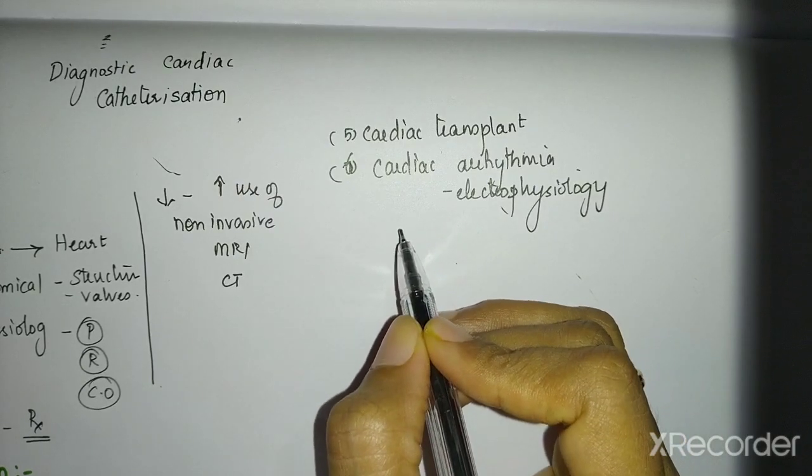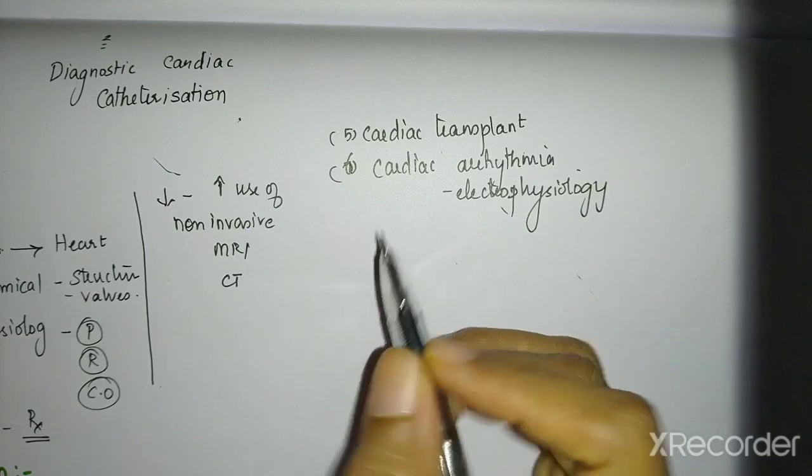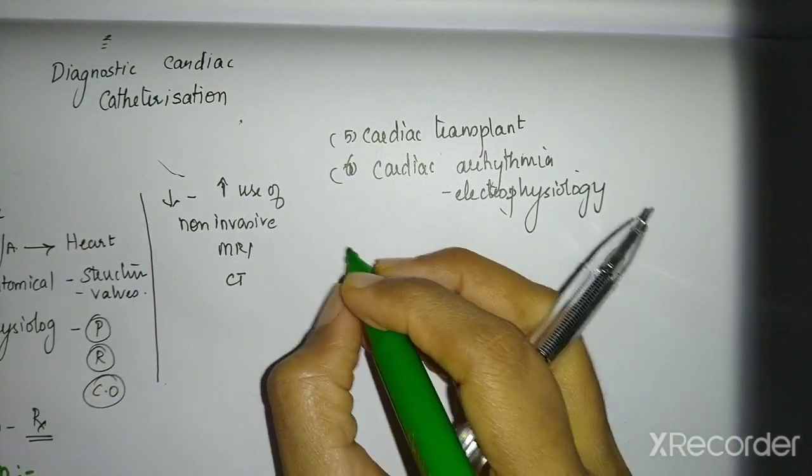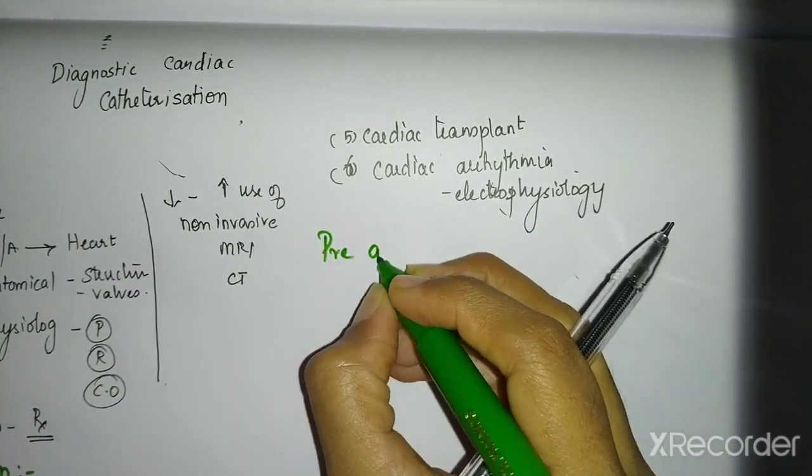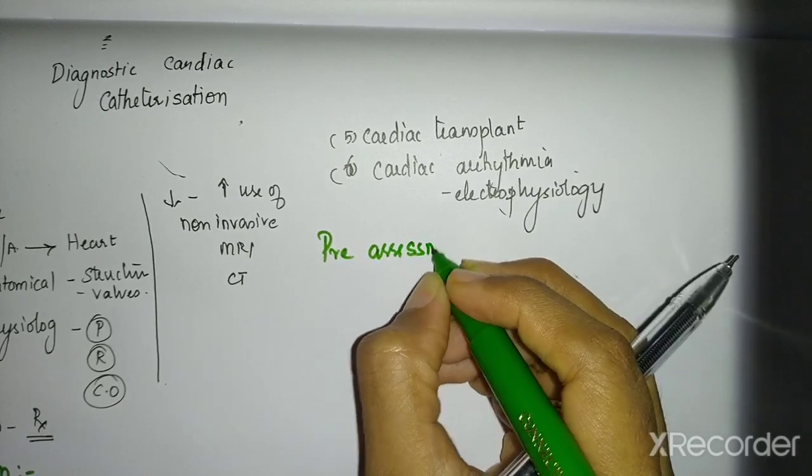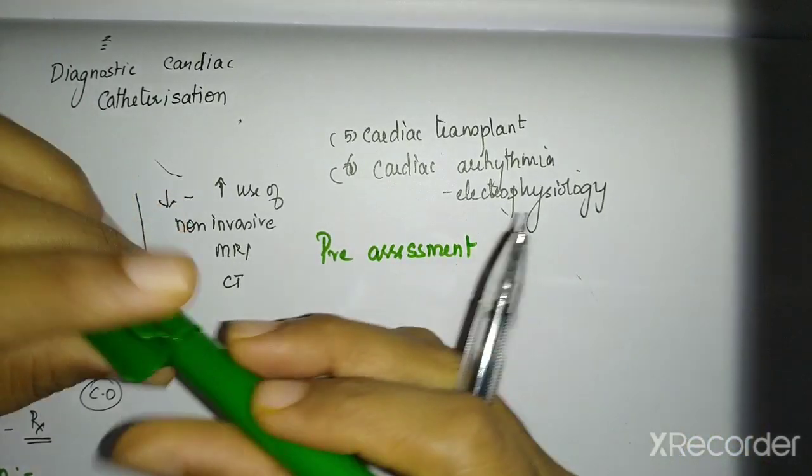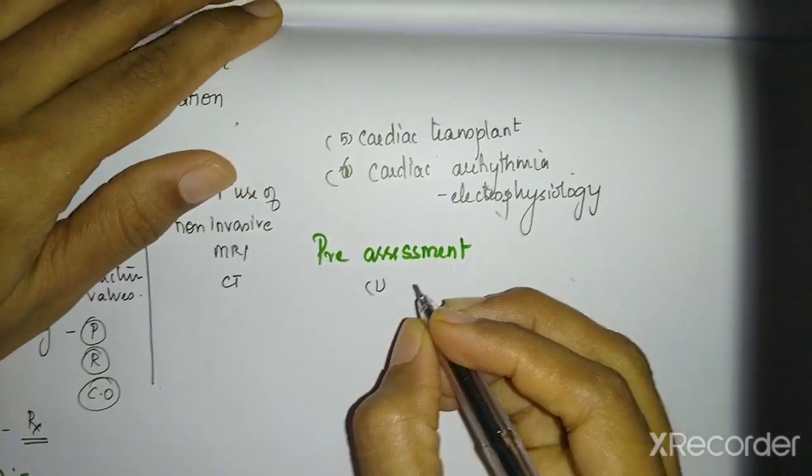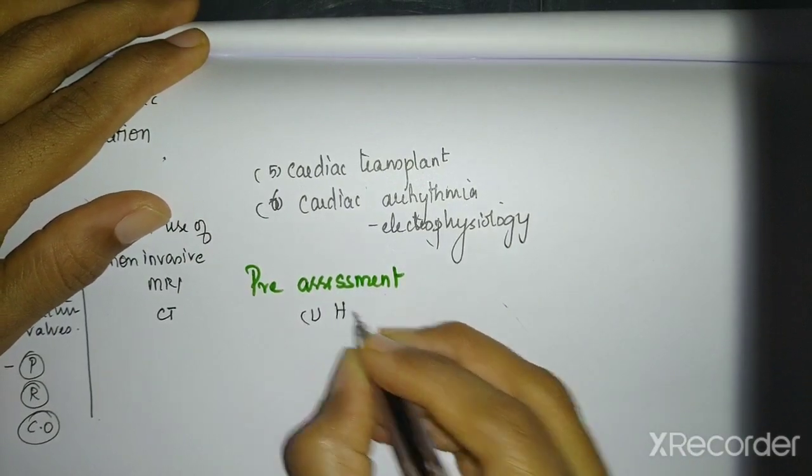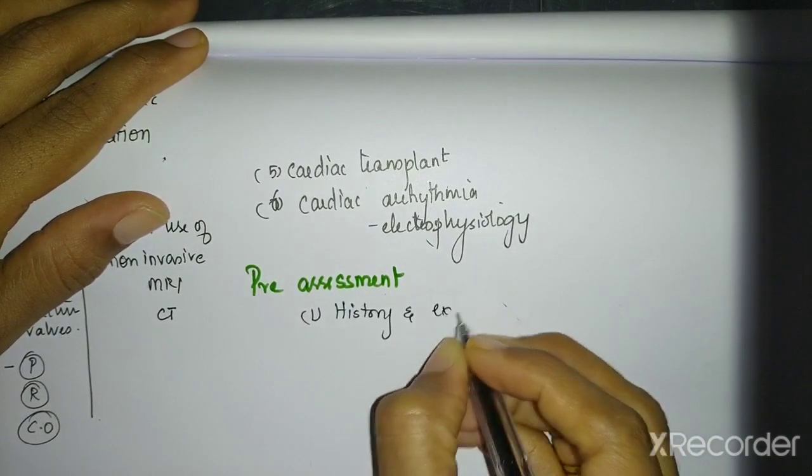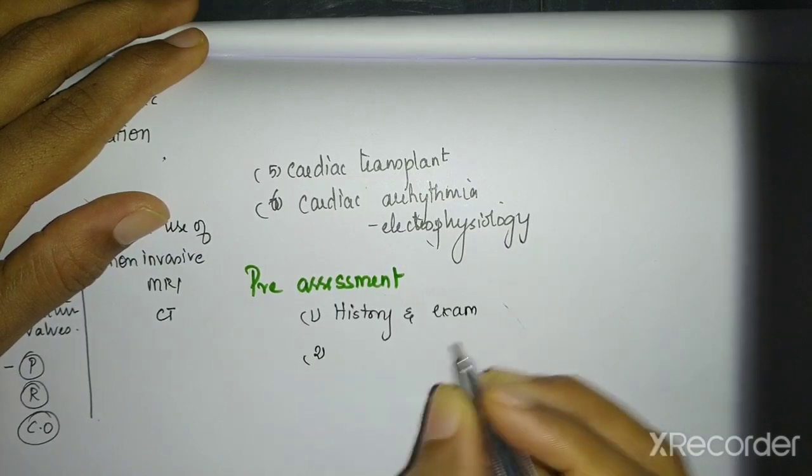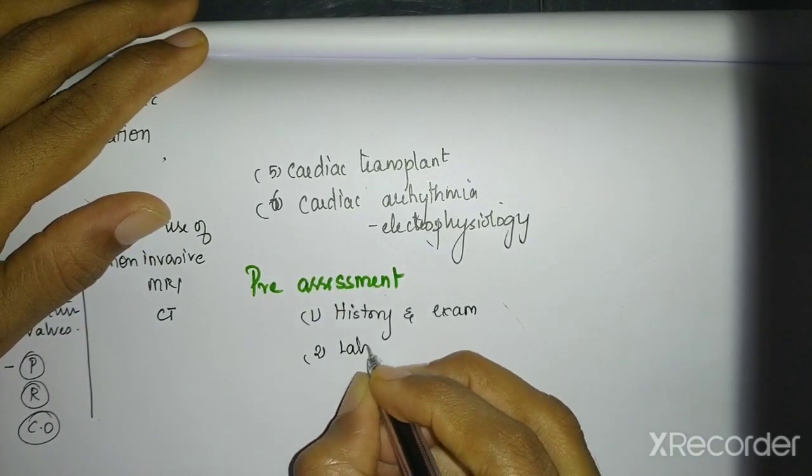So before we start the procedure, there are some pre-procedural things that needs to be done. So pre-assessment. What will your pre-assessment consist of? Pre-assessment will be, see before the day of surgery, you will do a complete history and examination of the child. Then pre-laboratory assessment.